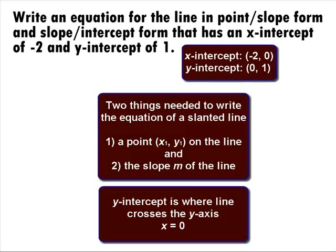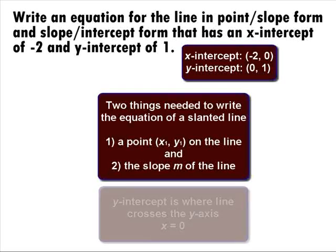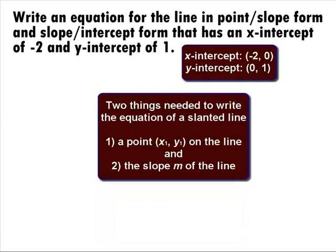Likewise, the y-intercept is where it crosses the y-axis, which means x equals 0. So the ordered pair for the y-intercept is 0, 1. We can use either point to fill in for our needed one point, but it looks like we need to find the slope.